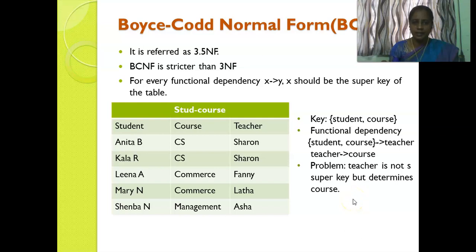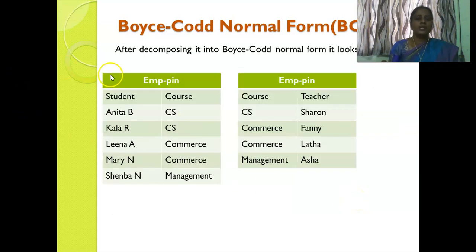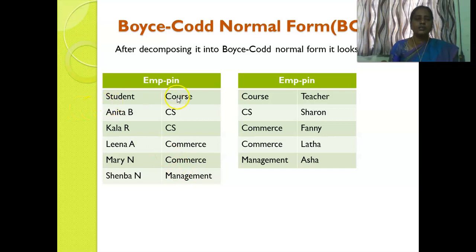The table is decomposed into two tables: one with student name and course, and another with course and teacher. Here student determines course, and course determines teacher. Now this is in Boyce-Codd normal form.